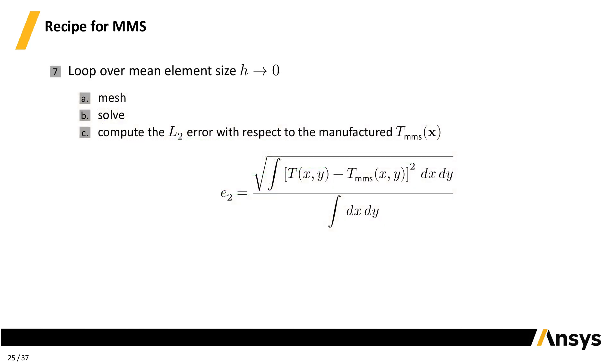7. Loop over element size tending to zero. A. Mesh with mean size h. B. Solve for T. C. Compute the L2 error using the manufactured solution as the exact solution. 8. Plot the logarithm of the error versus the logarithm of the element size to check there are straight lines and no round-off plateaus. 9. Fit the slope. 10. Show off the results to the world.